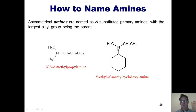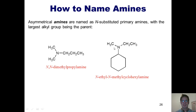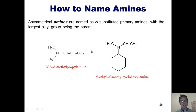In another example, the nitrogen is attached to a methyl, an ethyl, and a cyclohexyl group. The cyclohexyl is the largest, so the parent is cyclohexylamine. The methyl and ethyl are substituents on the nitrogen, indicated by placing N before each one. Listing substituents alphabetically, the full name is N-ethyl-N-methylcyclohexylamine.